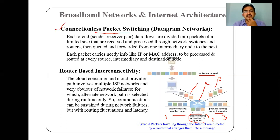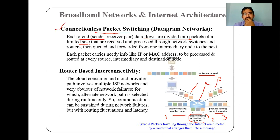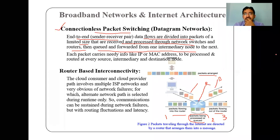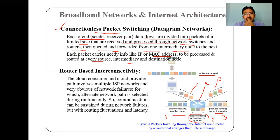From different systems connected together, considering end-to-end sender-to-receiver pairs, data flows — packets are divided into limited-size packets, like 512, 256, or 1024 bytes — received and processed via network switches and routers, then queued and forwarded from the intermediate node to the next one. Each packet carries IP or MAC addresses, processed and routed at every source, intermediate, and destination node.